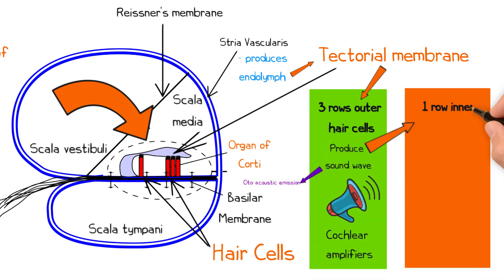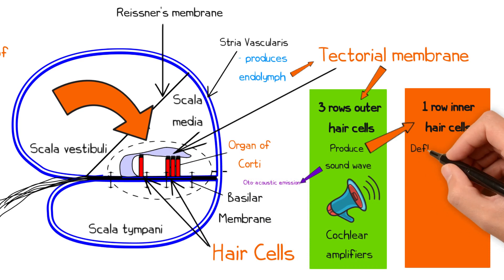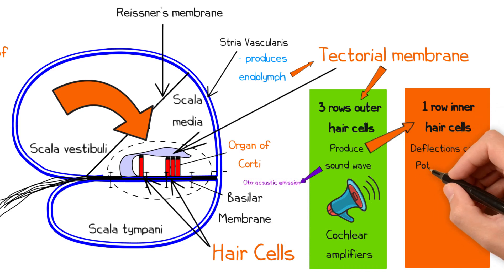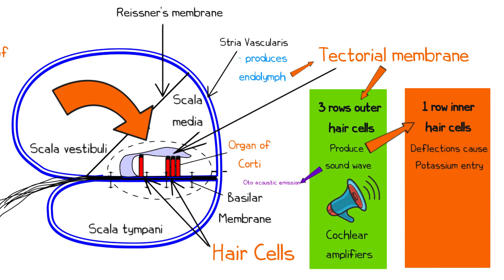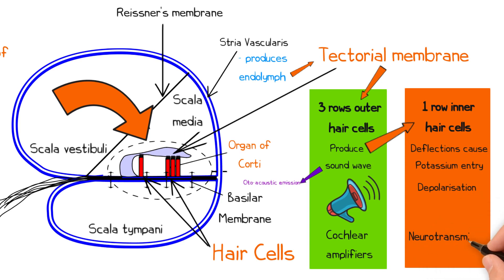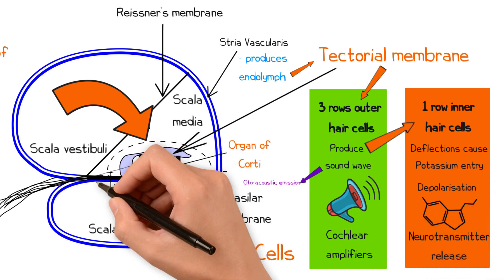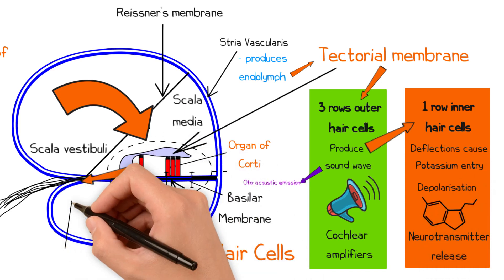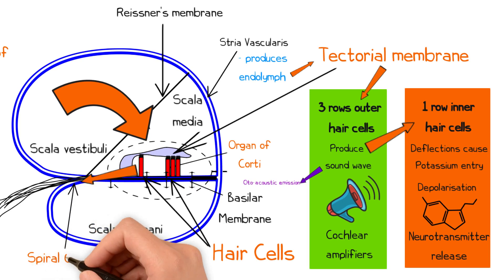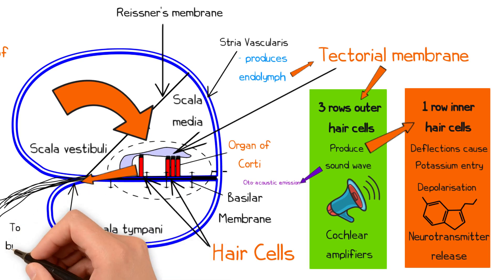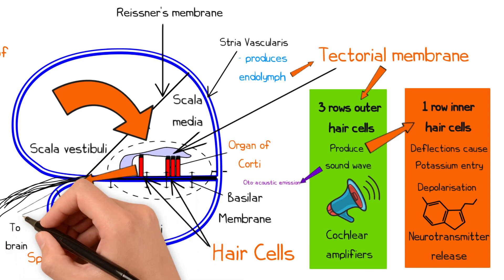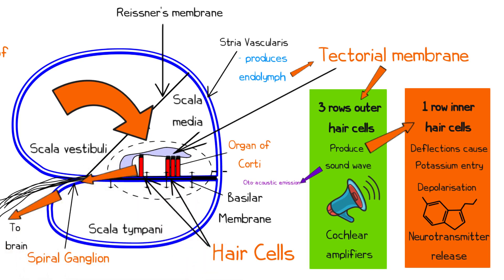The deflections of the inner hair cells from the sound wave result in potassium entering the cell, depolarizing the cell and resulting in neurotransmitter release to the spiral ganglion cells. This, in turn, generates an action potential carried to the brain by the cochlear nerve.